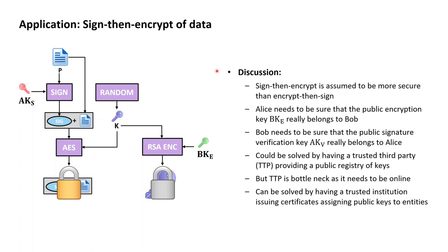Sticking with the sign-then-encrypt approach, in order for it to really work, Alice needs to be completely sure that the public encryption key she uses really belongs to Bob, as otherwise someone else instead of Bob would be able to read the email. On the other hand, Bob needs to be sure that the public key he uses to verify the digital signature belongs to Alice, as otherwise the email may have been sent by someone falsely claiming to be Alice. From this we understand that both Alice and Bob need to have trust in the authenticity of the public keys they use, and establishing this trust is a challenge that may be solved by multiple different approaches.